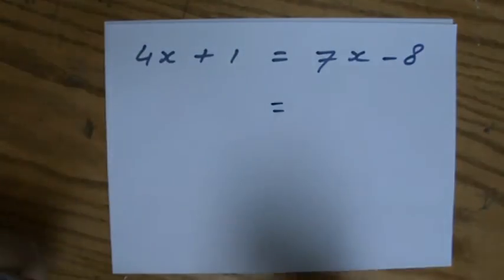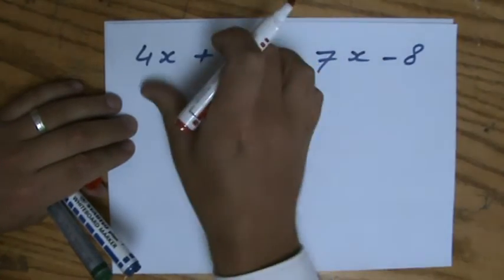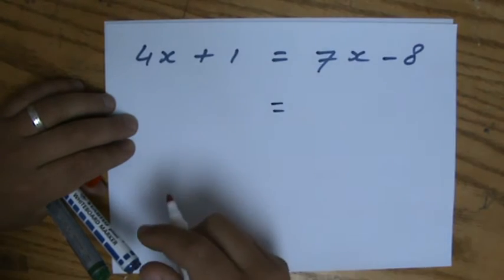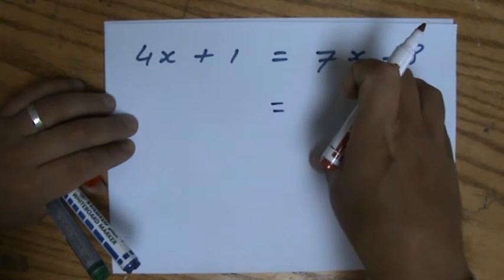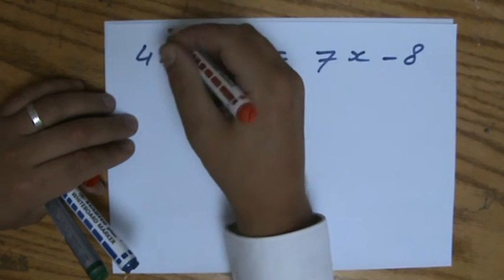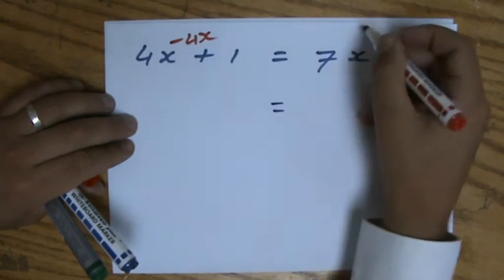I mean, I'll get the right answer. I'll get the right answer if I do it. But with those negatives, I know students make silly mistakes with them, unfortunately. So what am I going to do? I am going to leave my X terms on the right side. So I'm not going to take away 7X here. I'm going to take away 4X here.